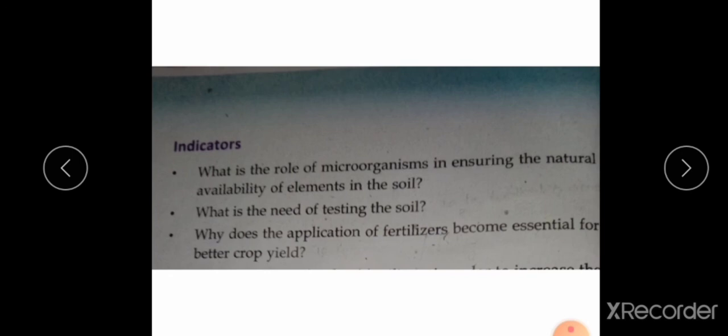What is the third question? Why does the application of fertilizer become essential for better crop yields? Fertility of the soil is increased by proper mannering. Mannering helps to make up the deficiency of elements in the soil that are required for plant growth. As a result, better yield is obtained. I hope everyone understands these three questions. Now you can write the answer in your own words. This is the homework for you. You can write in your textbook or in your notebook.